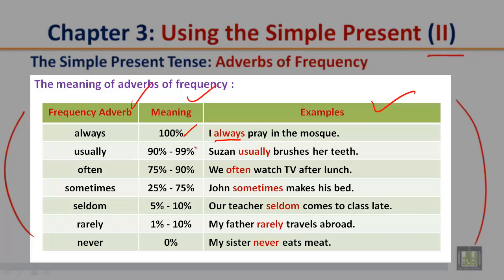The second frequency adverb is 'usually', meaning 90 to 99%. Susan usually brushes her teeth. The third frequency adverb is 'often', meaning 75 to 90%. We often watch TV after lunch. The fourth frequency adverb is 'sometimes', meaning 25 to 75%. John sometimes makes his bed.